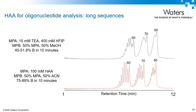In this example, HAA was compared to TEA-HFIP for the separation of a 60 to 80 mer dT ladder. Gradient times were adjusted so that the 60 and 80 mers eluted at approximately the same time to provide the most direct comparison between the two. From the chromatograms, it is clear that the larger species are more resolved in HAA.